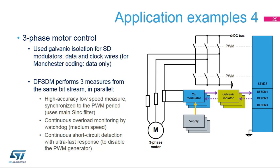This example relates to a three-phase industrial high-voltage, high-current motor drive where floating shunts and galvanic isolation are standard. Two or three channels are used for current in addition to two or three channels for voltage. The same bit stream is processed three times: first, the main filter is used for high-accuracy measurements over a relatively long time, synchronized with the PWM period to avoid switching noise; second, the watchdog channel uses the same bit stream with its own lower-order filter to continuously monitor signals and invoke an interrupt in case of overload; and third, the short-circuit detector rapidly detects modulator saturation and automatically disables the PWM generator through the dedicated DF-SDM-to-timer interconnection via a brake signal.